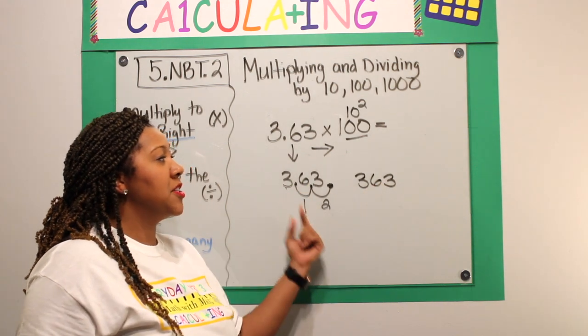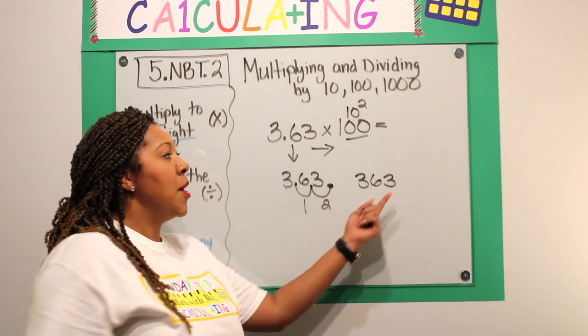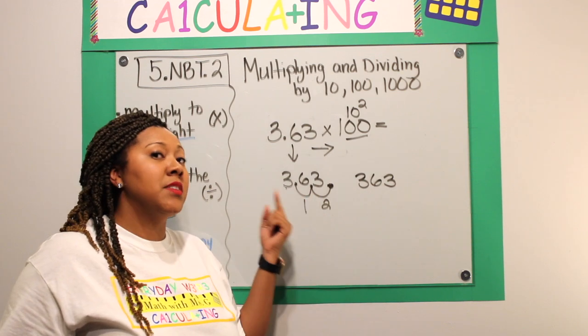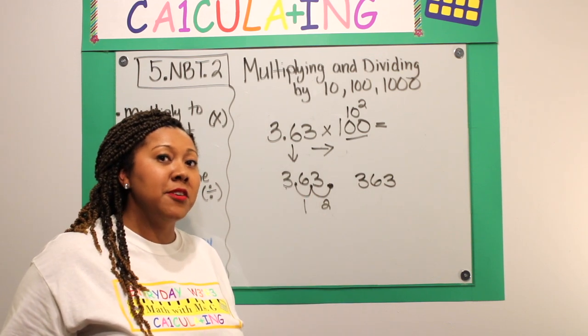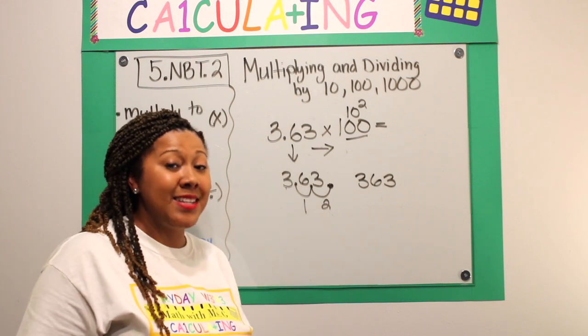Now, everything shifted over. As my decimal shifted to the right, my numbers actually shifted to the left because in a place value chart, when your numbers move to the left, they increase ten times.